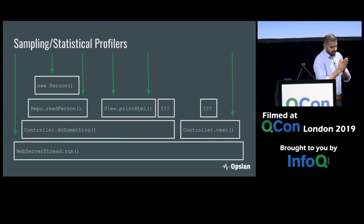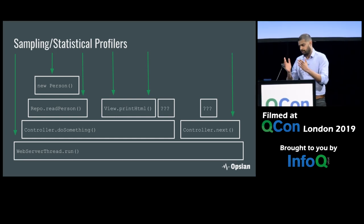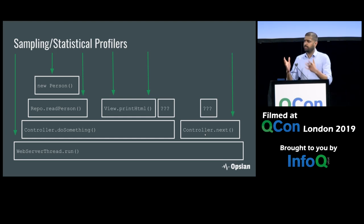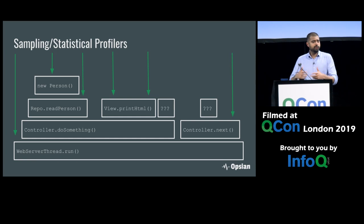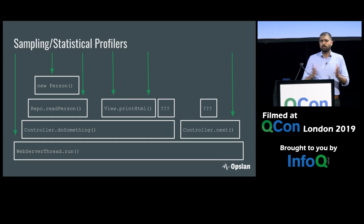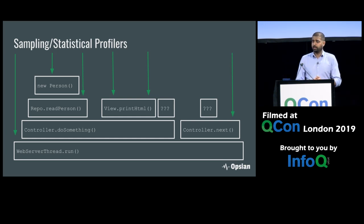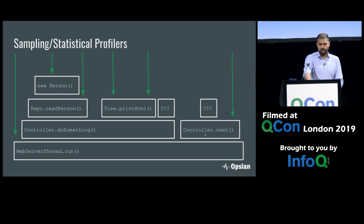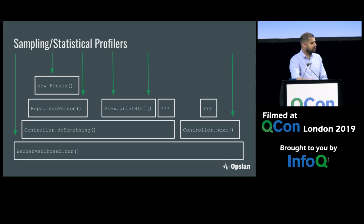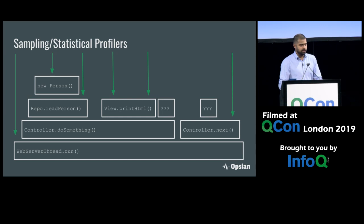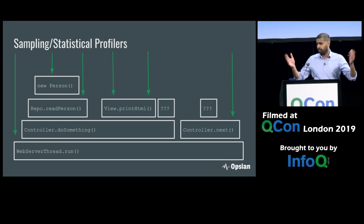Instead of instrumenting the program under test, we can use statistical or sampling profiling. Sampling profiling works by stopping the program periodically and measuring the resource of interest. For wall clock time, we could stop the program every 100 milliseconds and record what it's doing, then aggregate all those samples to build a statistical picture of performance. For example, profiling a web server thread — sampling it first in the run method, then in the new person constructor — and aggregating to produce a flame graph, tree view, or hotspot report.